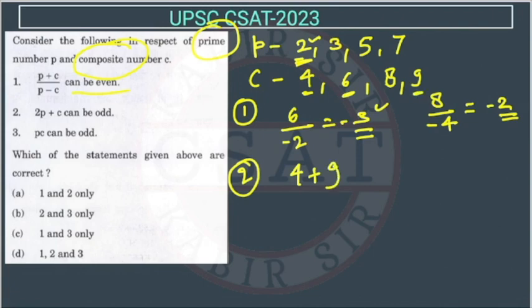So we can take any number. 9 plus 4 is 13. So this can be odd. So second also right.